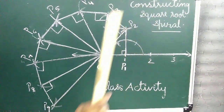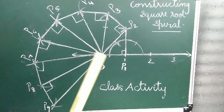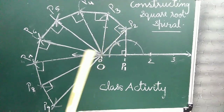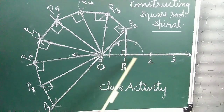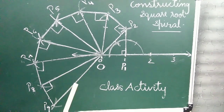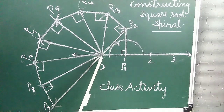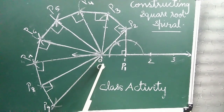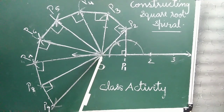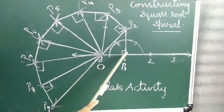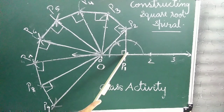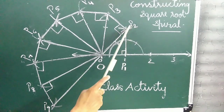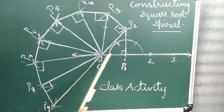Constructing a square root spiral. First, we draw a number line and mark zero, one, two, three, etc. Now mark a point as O and take a line segment OP1 of unit length. We are going to make a perpendicular line segment P1P2 on OP1.